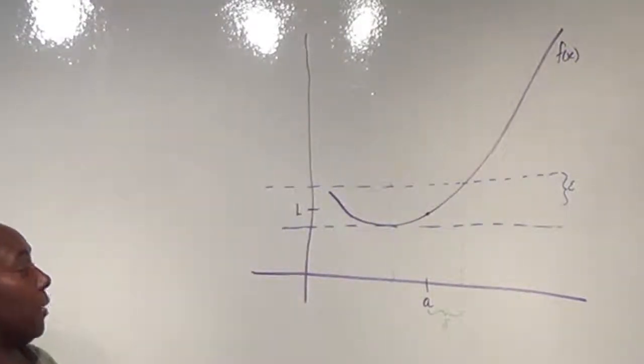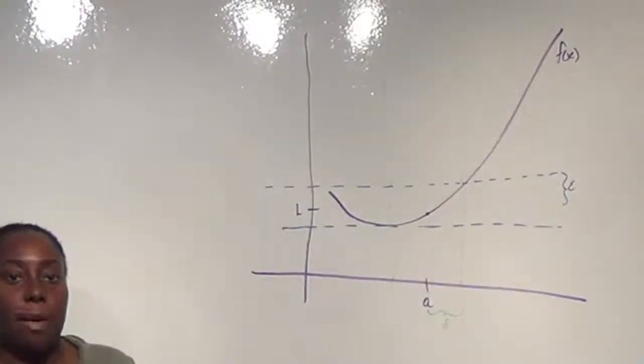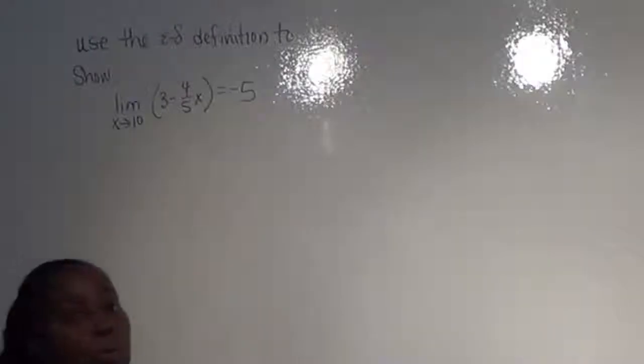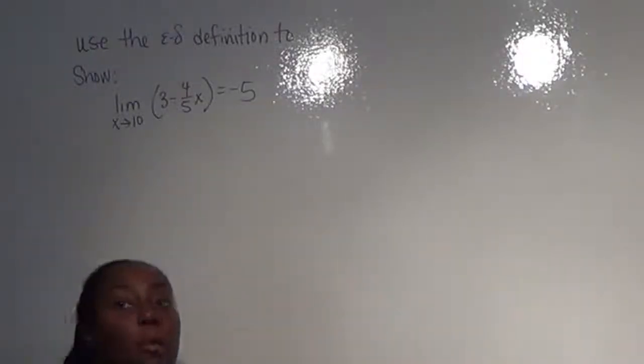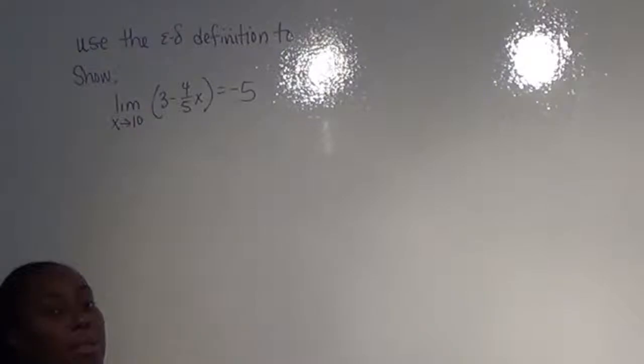And if we find the delta and epsilon at just the right values, we can pinpoint where this limit is. So let's look at an example. We want to use the epsilon delta definition to show that the limit as x goes to 10 of 3 minus 4 fifths x is equal to negative 5.